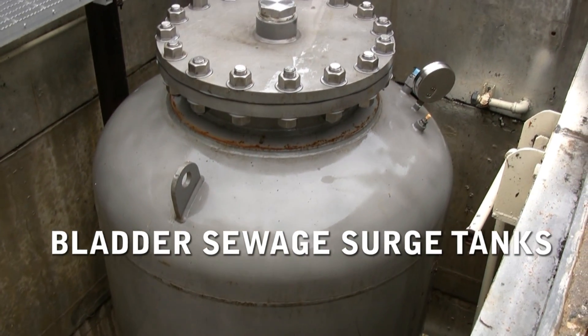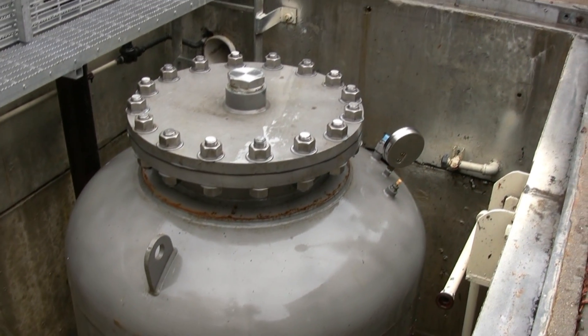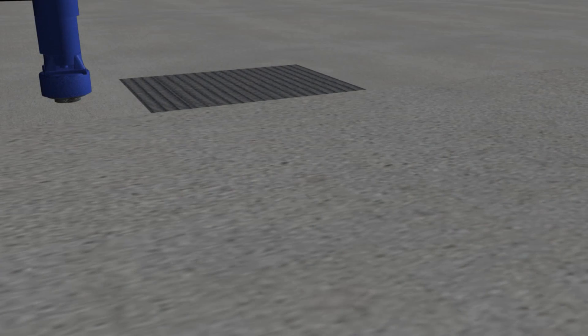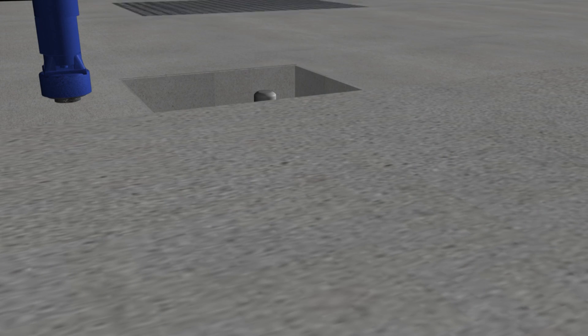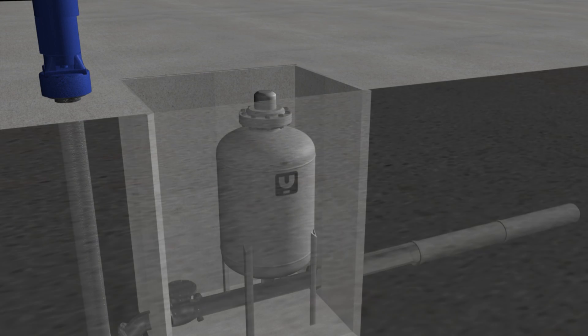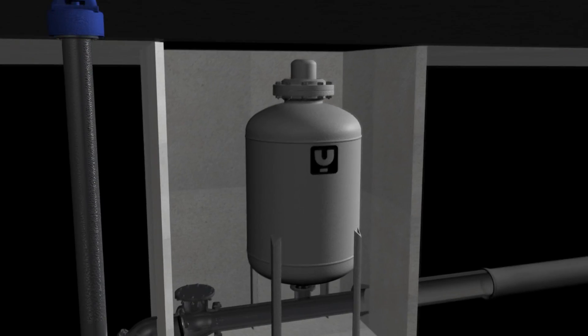Sewage system piping under pump pressure can experience the same stresses during pump failure or valve closures. The bladder sewage surge tank is often located below grade level in a vault.